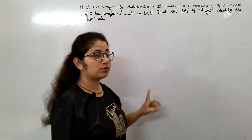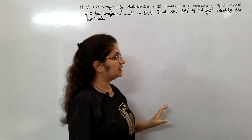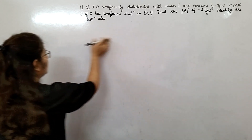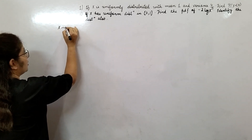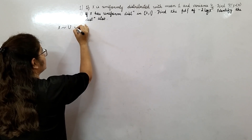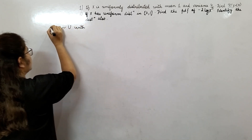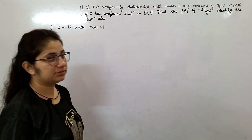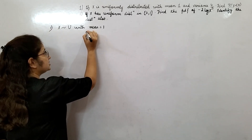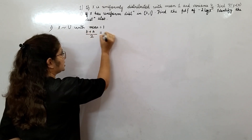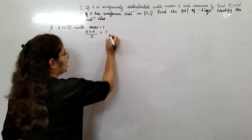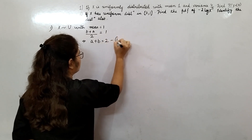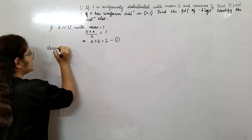We have to find the probability of random variable X less than 0. X is uniformly distributed. For the mean part: the mean in uniform distribution is (b + a)/2 = 1, so from here a + b = 2. This is your first equation. Second, the variance is given as 4/3.